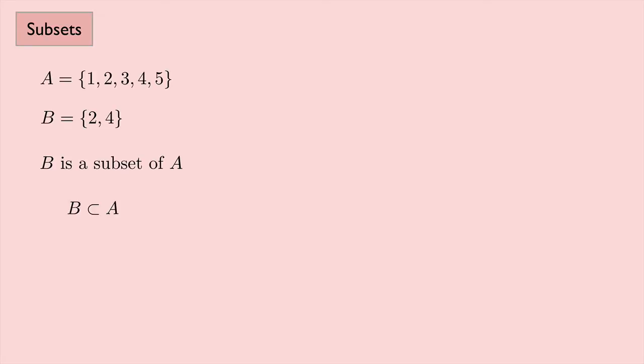And we have some notation for this. We say that B is a subset of A. We write it like this, where it kind of looks like a U that's been turned on its side. And the order is important here. This means that B is a subset of A.